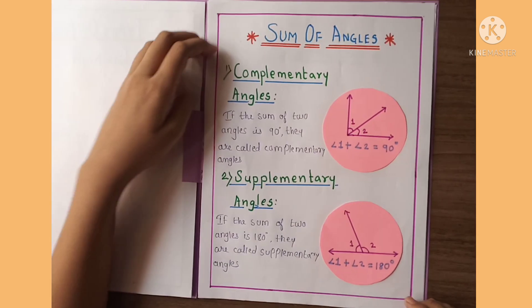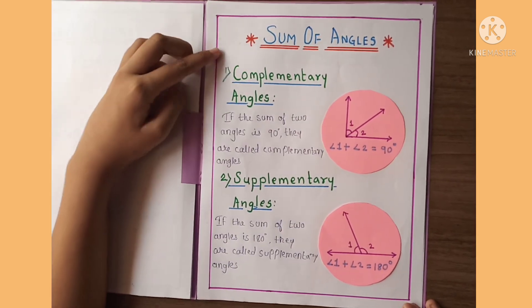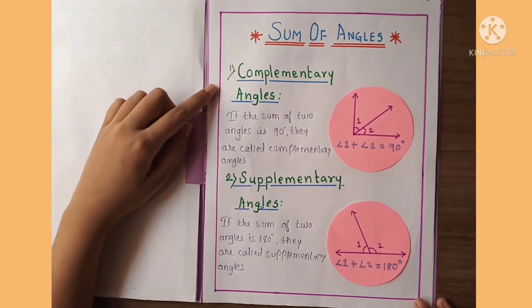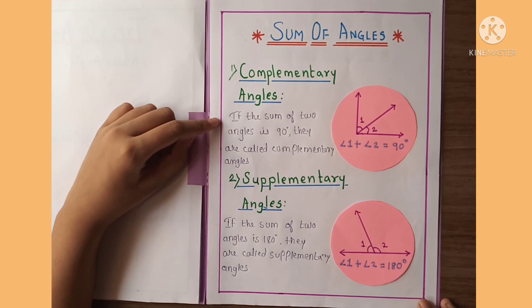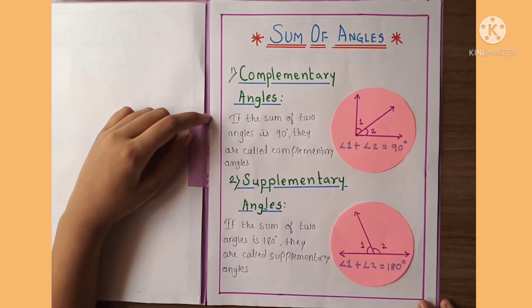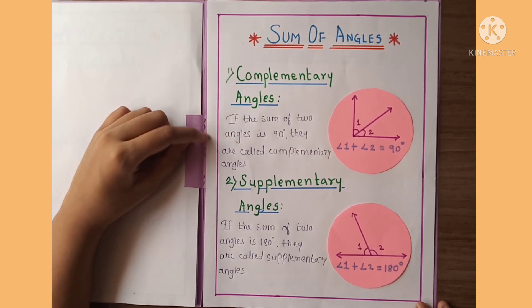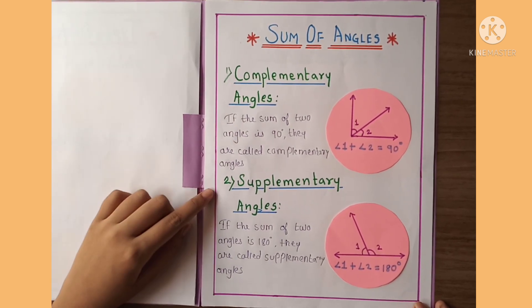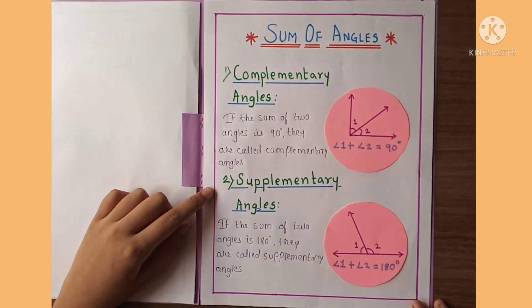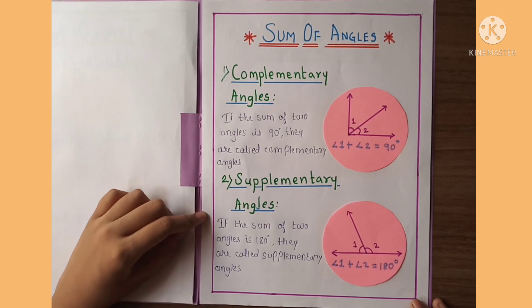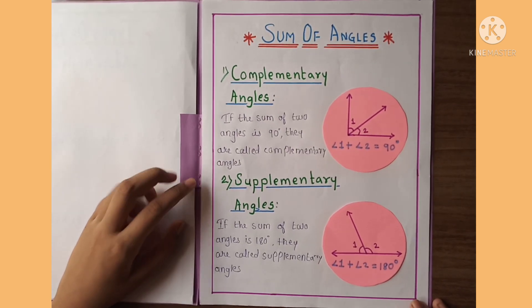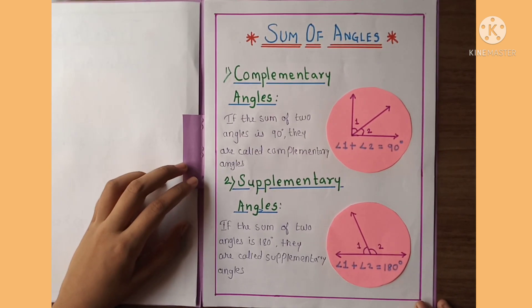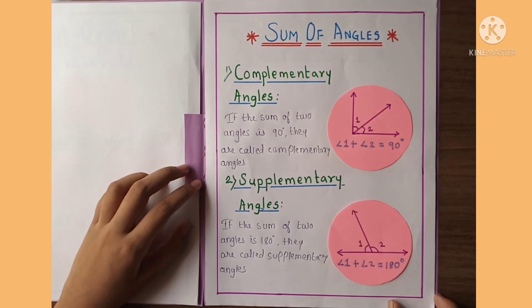Here is the sum of angles. The first one is complementary angle — if the sum of two angles is 90 degrees, they are called complementary angles.